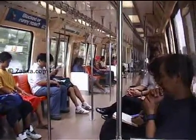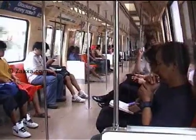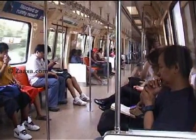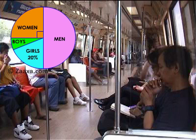There are men, women, boys and girls travelling in this train right now. This is the pie chart of the people travelling in this train. It contains four sections, each representing a particular group of people. The size of each section represents the proportion of a group of people in relation to the whole. The whole circle of this pie chart represents all the people in the train.